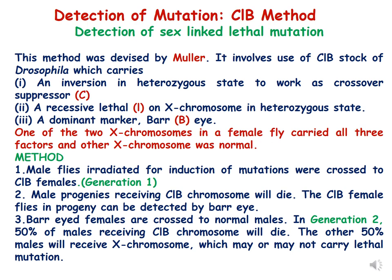The bar-eyed females found in F1 generation are then crossed to normal males. In F2 generation, 50 percent of males receiving the CLB chromosome will die because they carry the lethal gene L. The other 50 percent of males will receive the X chromosome that may or may not carry a lethal mutation, depending on whether the mutagen is lethal or not.